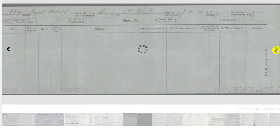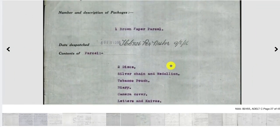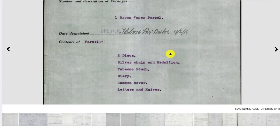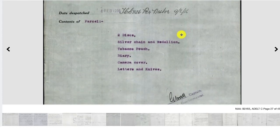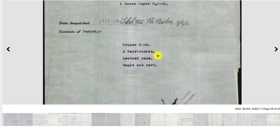There are also lists of Carl's personal possessions being returned to his family. Contained in the first brown paper parcel, we can see he had a medallion, tobacco, his diary, some letters and knives, as well as a prayer book, two hairbrushes, a leather case, and his bugle and cord. And if we remember, Carl was a trumpeter, so a bugle is not as strange a thing for him to have as you might think.